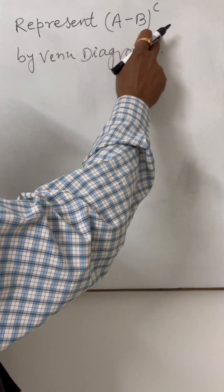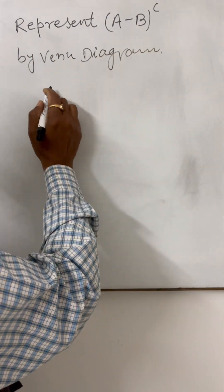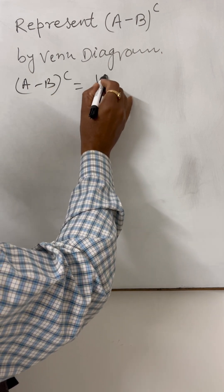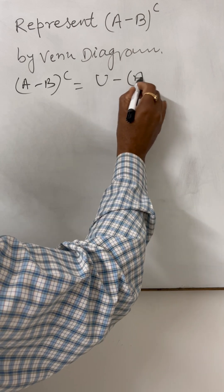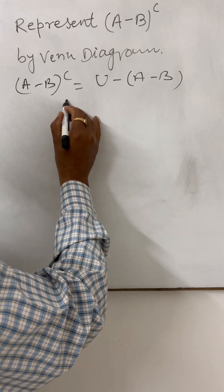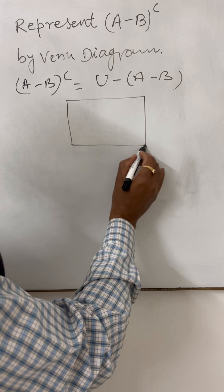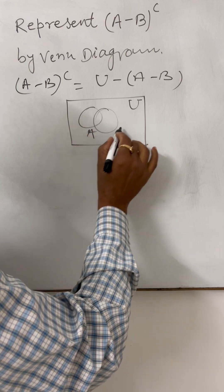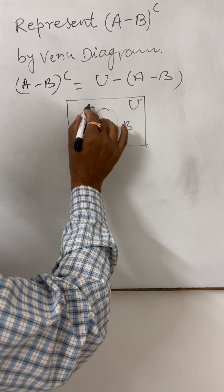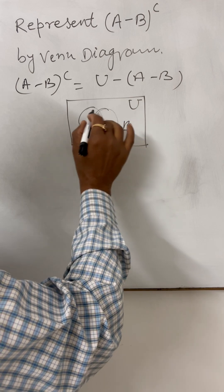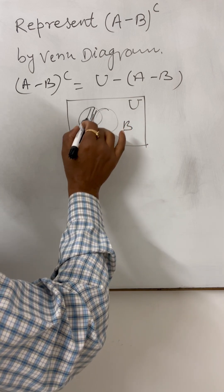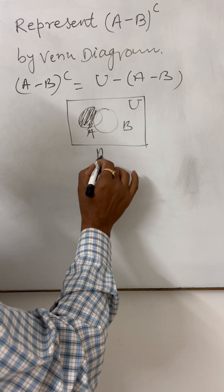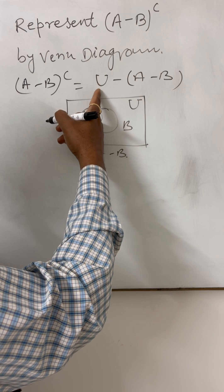Here we have to represent A minus B whole complement by Venn diagram. A minus B whole complement is equal to universal set minus set A minus B. Let us draw a rectangle or square — this represents the universal set. This is set A and this is set B. A minus B means from set A we are omitting B, so the remaining shaded portion is A minus B.